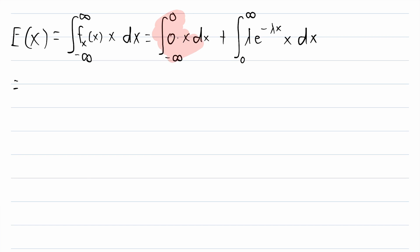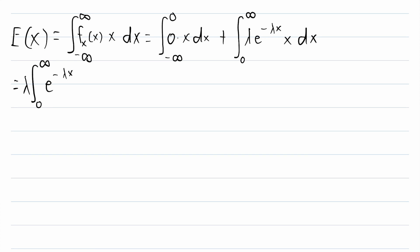This first integral simplifies quite nicely — it's just an integral of 0, which equals 0. All we have left is the integral from 0 to infinity of lambda e to the negative lambda x times x dx. We can take that constant lambda out in front of the integral, leaving us with the integral of e to the negative lambda x times x dx.